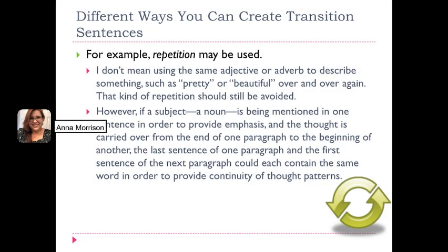There are different ways that you can create transition sentences. For example, you can use repetition, which does not mean just saying the same word over and over again — we should avoid that. However, if you have a subject or noun being mentioned in one sentence as emphasis, and the thought is carried over from the end of one paragraph to the beginning of another, the last sentence of one paragraph and the first sentence of the next could each contain the same word in order to provide continuity of thought patterns.